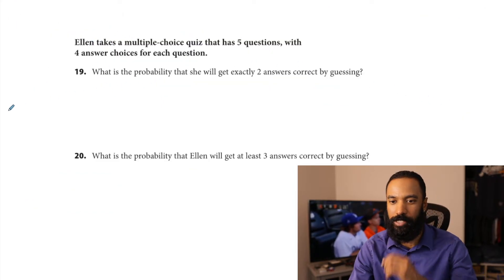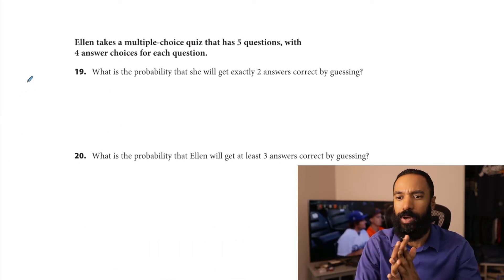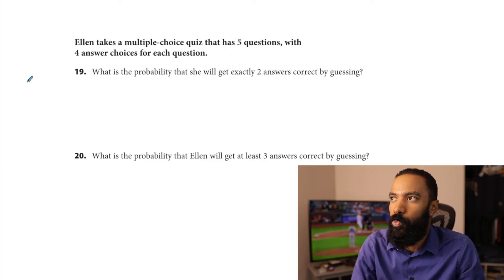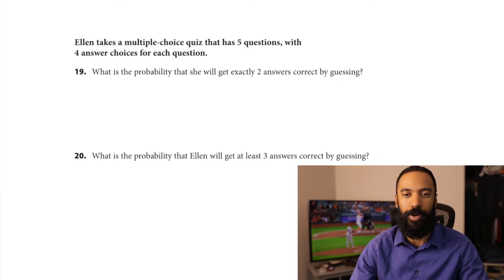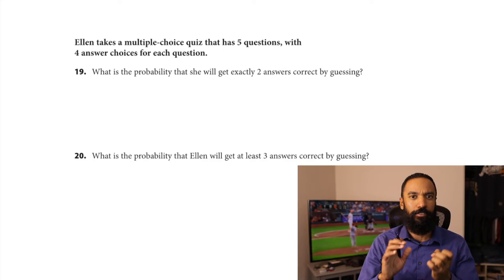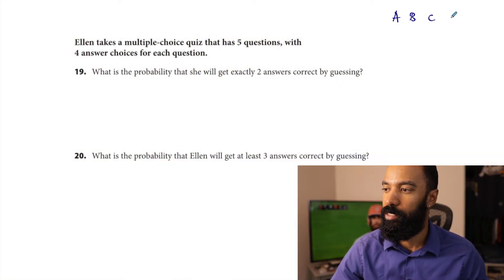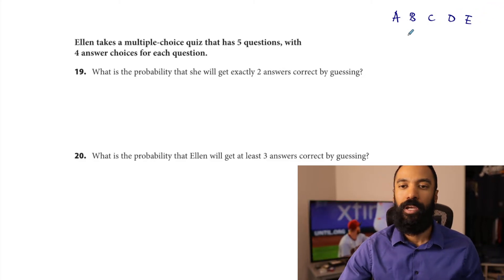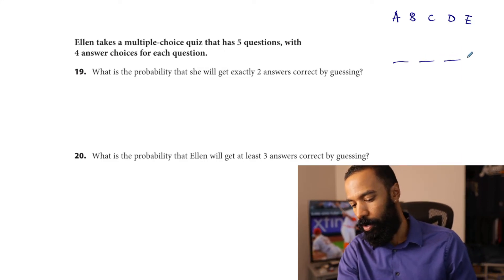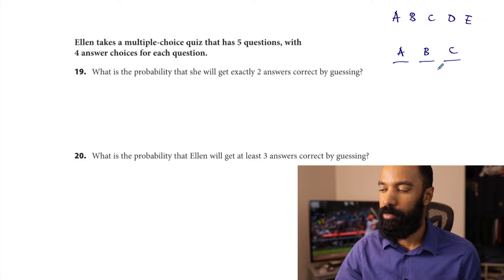Now I have to start talking about combinations. Combinations are the different number of ways that you can arrange something from a larger set of things. Let's say there are five people and you want to choose three of them — how many different ways can you choose three people among the five? If there are five people named A, B, C, D, E, and I have three spots to choose, what are the different ways?